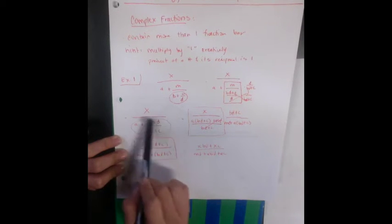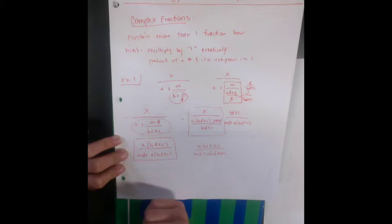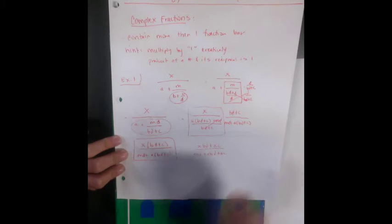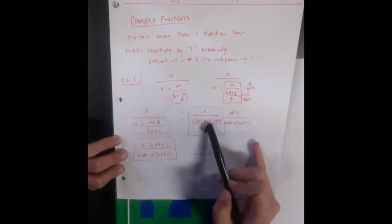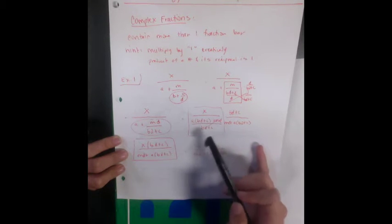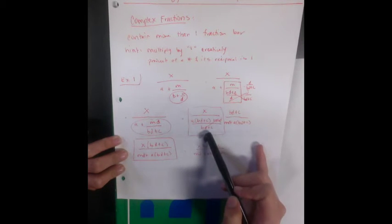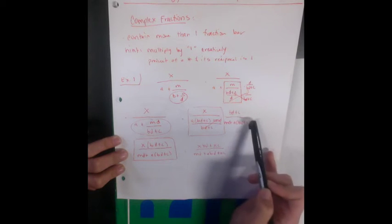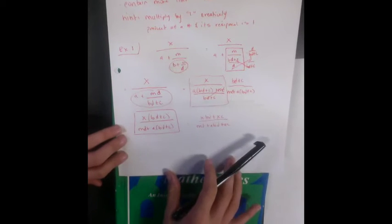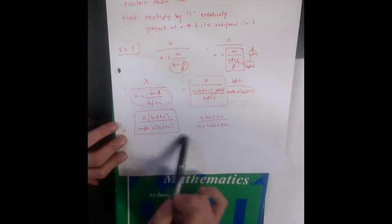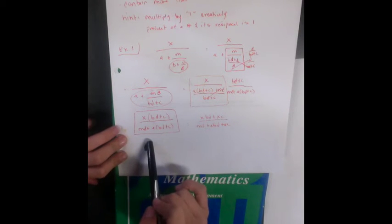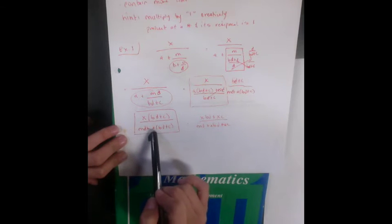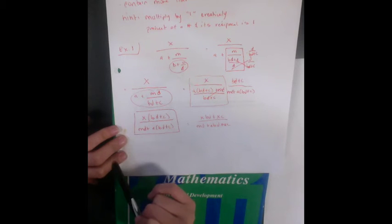Again in my denominator I want to combine that into one fraction. If I do that here I get a times bd plus c plus md over bd plus c, and again I multiply by the reciprocal of my denominator. Doing that gives me my final answer x times bd plus c over md plus a times bd plus c.